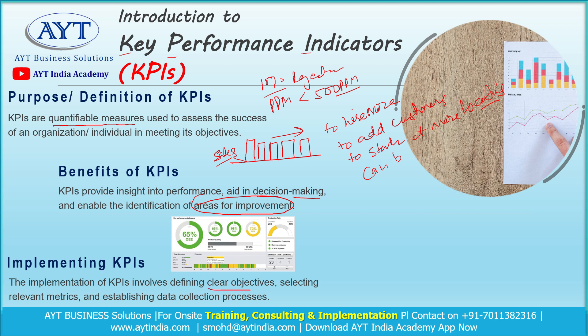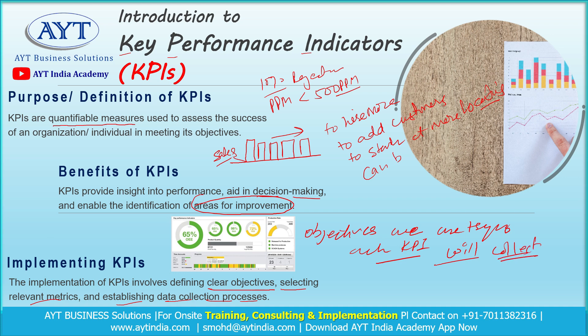For implementing KPIs we should have clear objectives, select the relevant metrics, and establish the data collection process properly. We should have a clear mind about what objectives we are trying to achieve through KPIs. How we will collect the data is the most important thing — the data collection method should be clear and systematic so that data can be collected easily.